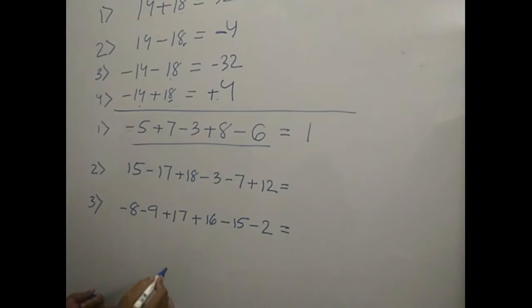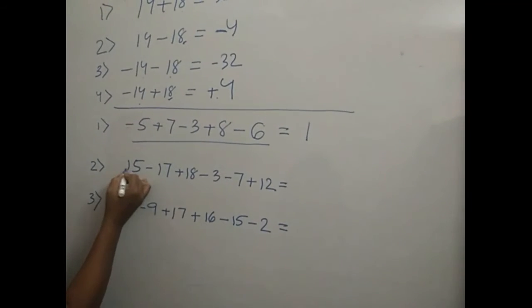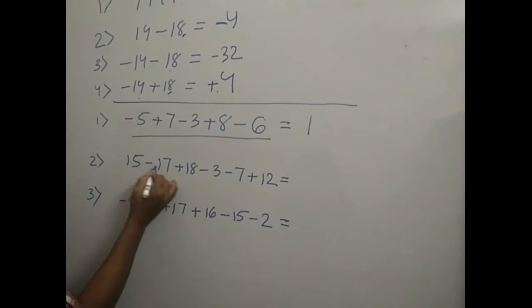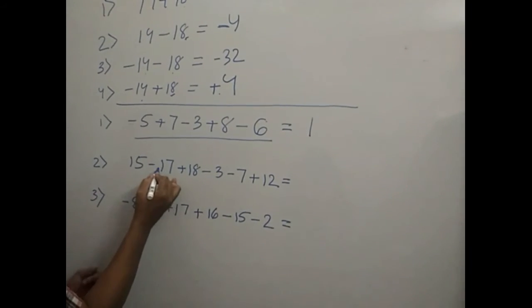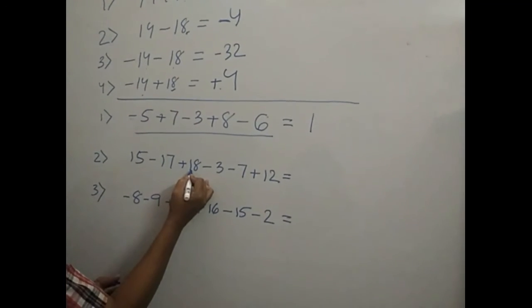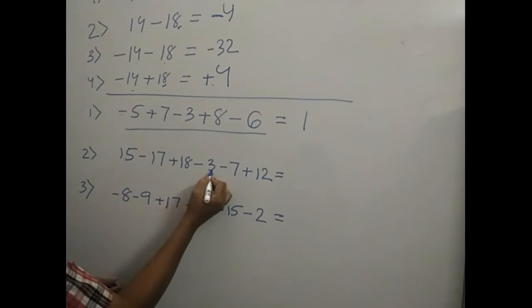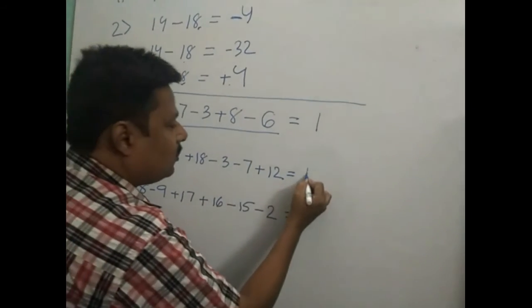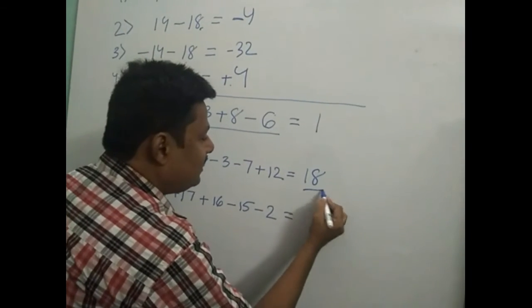Next question, let us see, little bit larger number, 15. Start from the left. 15 minus 17 is equal to minus 2. Minus 2 plus 18 is equal to 16. 16 minus 3 is equal to 13. 13 minus 7 is equal to 6. 6 plus 12 is equal to 18. Answer is 18.